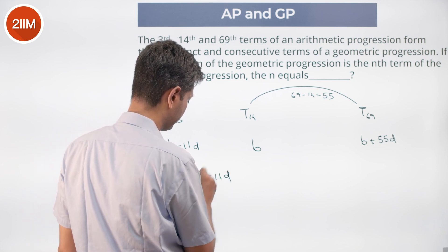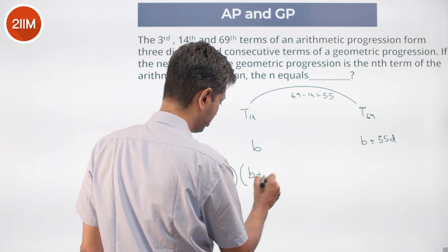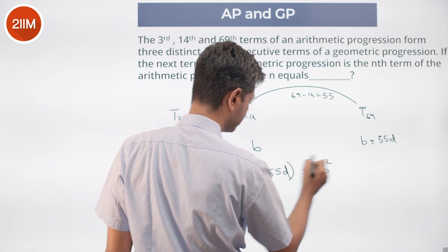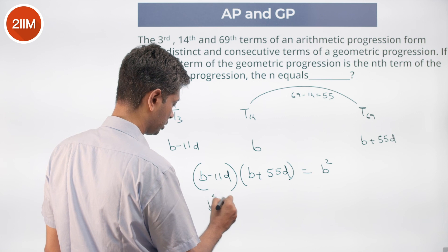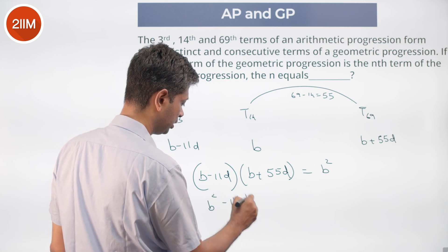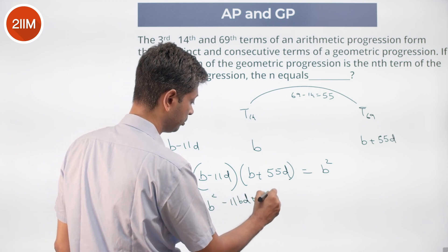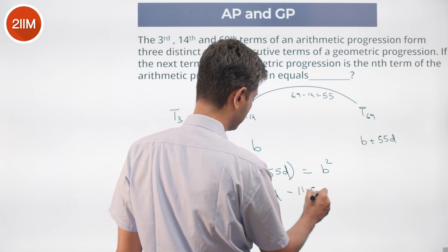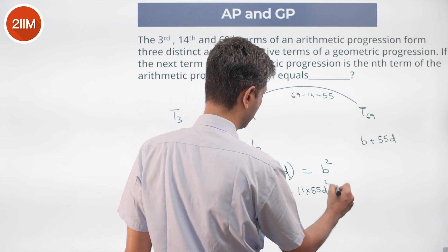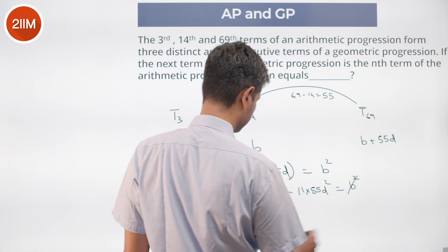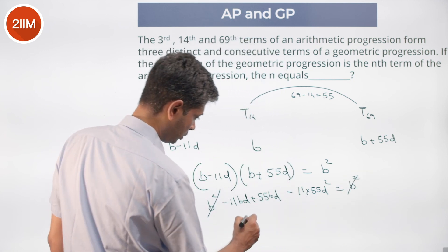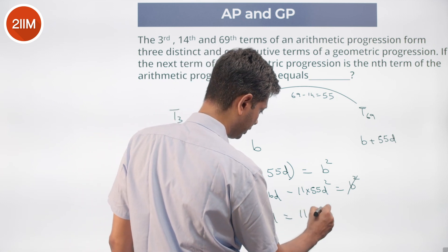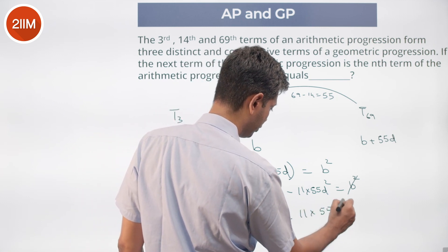b minus 11d into b plus 55d equal to b square. So b square minus 11bd plus 55bd minus 11 into 55d square equals b square. 44bd equals 11 into 55d square.